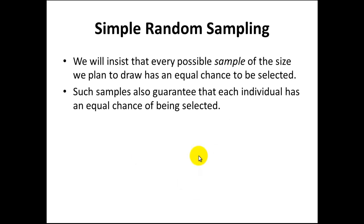One way to choose a sample is to use simple random sampling. In this case we insist that every possible sample of the size we plan to use has an equal chance of being selected. The key word here in this type of sampling is everything has an equal chance of being chosen, or every student would have an equal chance of being chosen.